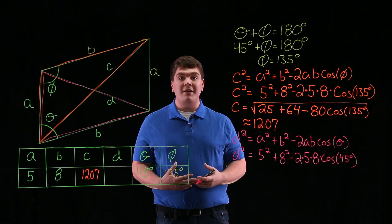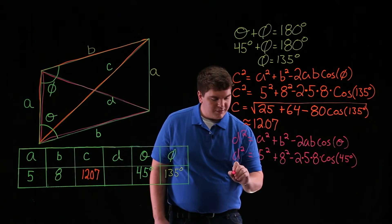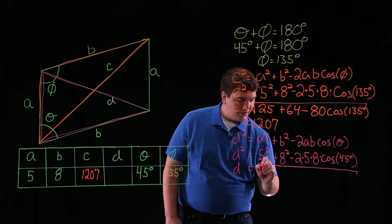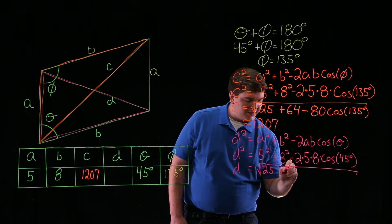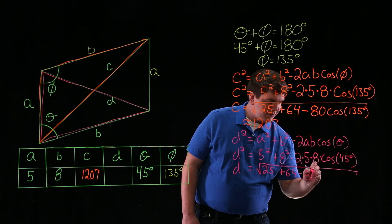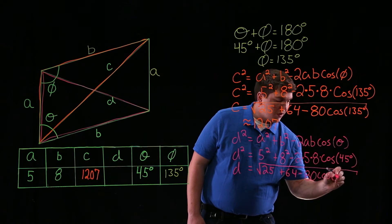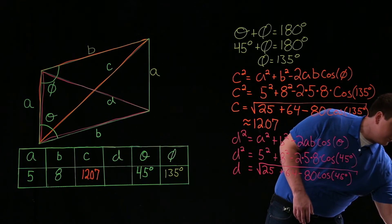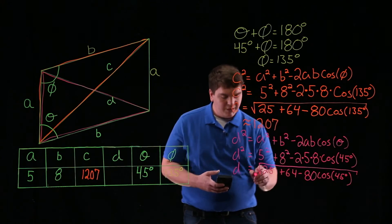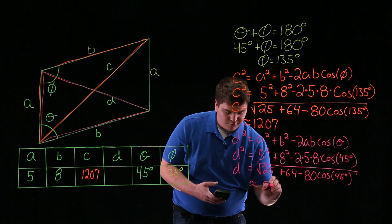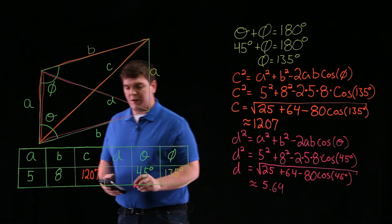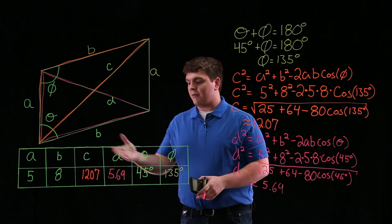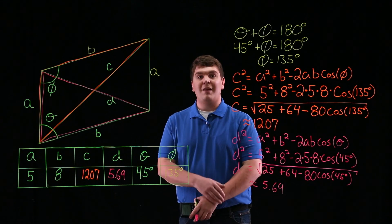Now we can solve for D by taking the square root of both sides of the equation, giving us D is equal to the square root of 25, plus 64, minus 80, times the cosine of 45 degrees. And again, by using a calculator, we find that this is approximately 5.69. So D is 5.69. And there we found the values for C, D, and phi, and we've solved the parallelogram.